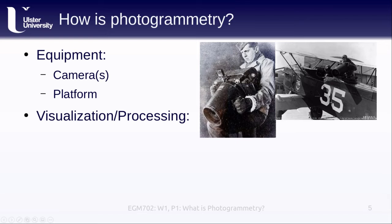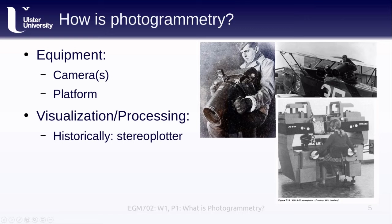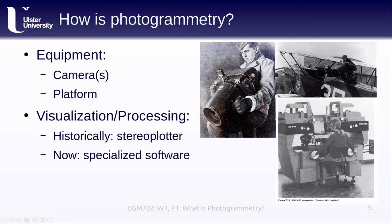The next step is visualization or processing. In the olden times, you would use something called a stereo plotter — a machine where you place one photograph on the left side and one on the right, look through the viewfinder, and it shows you the two images in stereo mode, where you actually see depth. Nowadays, we use specialized software for the most part, although you can still find these machines around and they're kind of fun to play with.